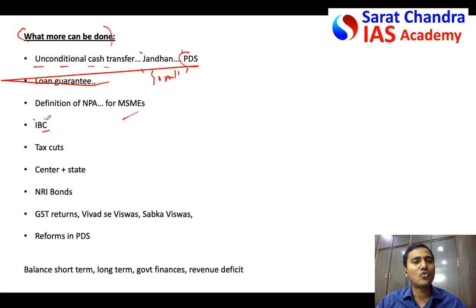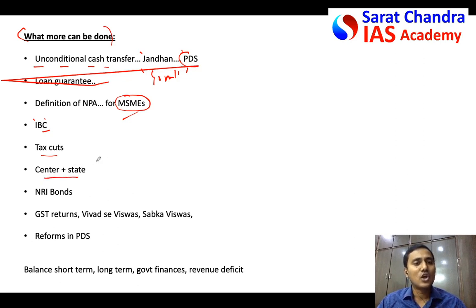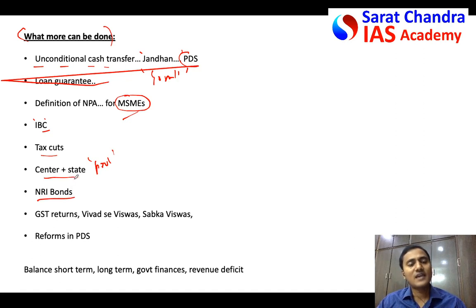MSMEs contribute almost 30-35 percent of GDP and are the largest provider of employment in India after agriculture, so they need special protection. Government also has to reduce taxes — though tax laws were addressed in the recent budget, they have to be tweaked for the COVID-19 situation. Centre and states must work together, and this is the time for cooperative federalism. RBI should also release more NRI bonds, which are sold to NRIs at higher interest rates to bring more funds into India.